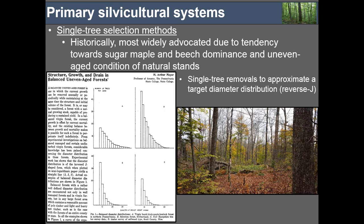The general approach was to manage toward a target diameter distribution — usually a reverse J-shaped distribution. This was supported by Arthur Meyer's research looking at old-growth forests across temperate forest ecosystems, finding that when you plot the diameter distribution of these systems you get a characteristic reverse J-shaped curve. This was taken from Pennsylvania, Switzerland, New Hampshire, and Minnesota and used as a guiding target structure for single tree selection. One important point is that Meyer's work was actually based on landscape-scale rather than stand-scale diameter distributions, but nonetheless this approach has been widely used.